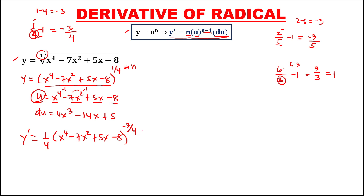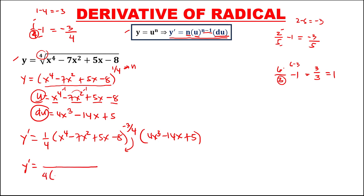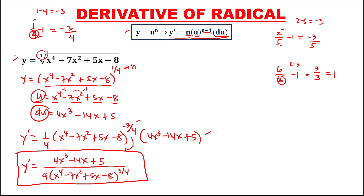Then times du, the derivative of u, which is 4x to the power 3 minus 14x plus 5. To simplify: since the exponent is negative, we bring the expression down to the denominator, so the denominator becomes 4 times x to the power 4 minus 7x squared plus 5x minus 8, to the power 3 over 4, with numerator 4x to the power 3 minus 14x plus 5. This is now the derivative for this function.